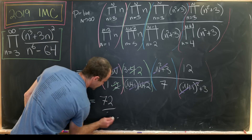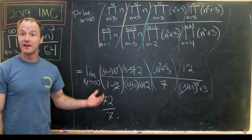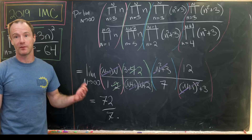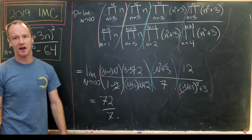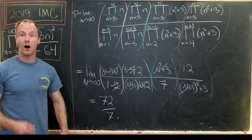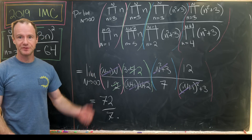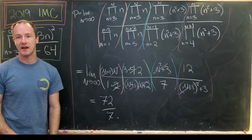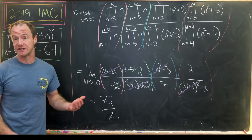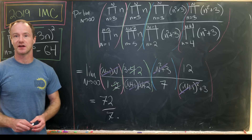So our final answer is 72 over 7. If you like this problem, I've got a couple of other problems on infinite products — one should be on the screen right now if you'd like to check it out. And that's a good place to stop.